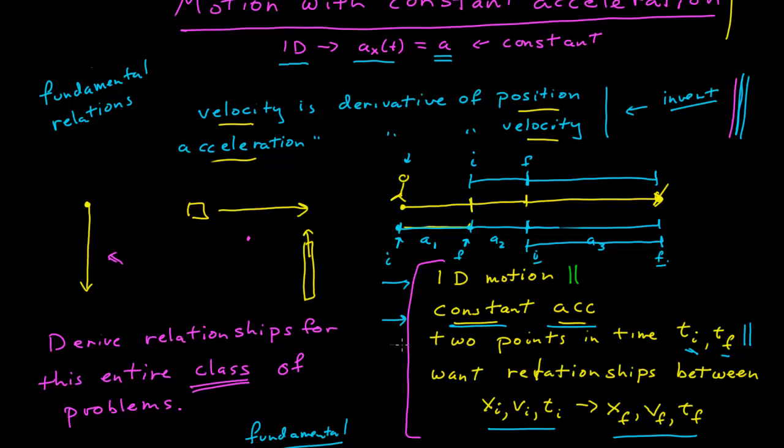We have two points in time, t initial and t final, and we want to build relationships between the initial position and velocity and time to the final position, velocity, and time.